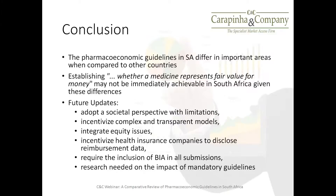If one looks at the pharmacoeconomic guidelines in South Africa, they differ in significant ways compared to guidelines across the world. I picked 12 countries in total to compare South Africa to — six high-income countries and six middle-income countries. South Africa's guidelines appear to differ in important areas. The concluding remarks related to this research is that establishing whether a medicine represents fair value for money may not be immediately achievable in South Africa, given these differences that exist.